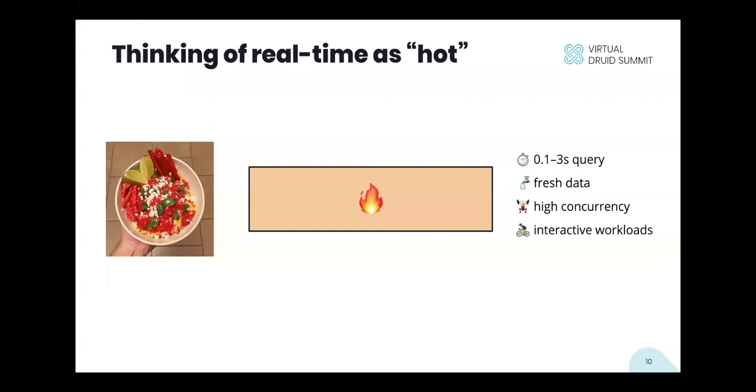So everything we've been talking about up until now is this real-time data, which is this Corgi's case for Gerard, and does drive a large chunk of the roadmap. And you can think of this as hot data in terms of temperature.